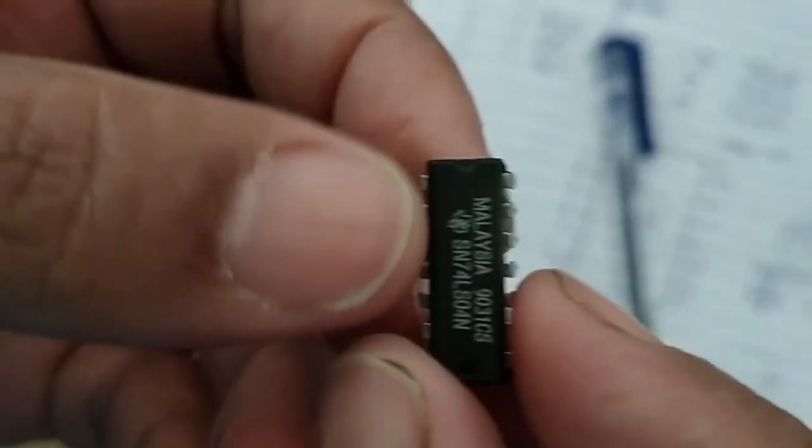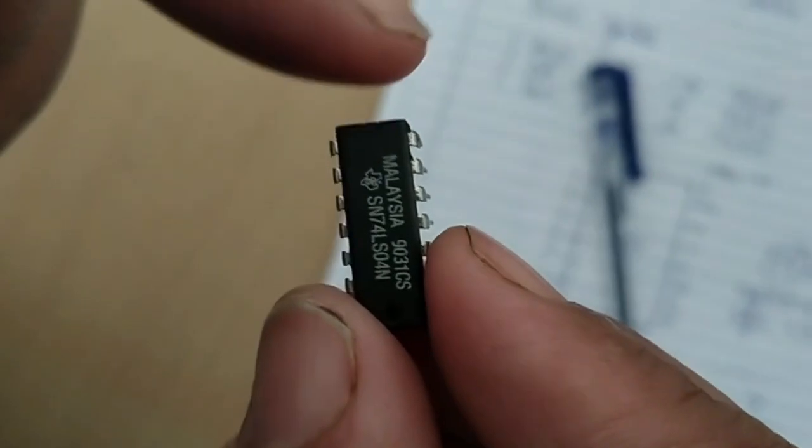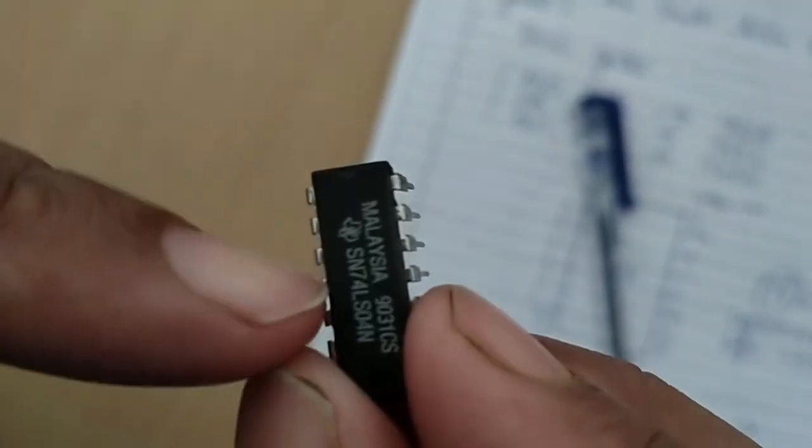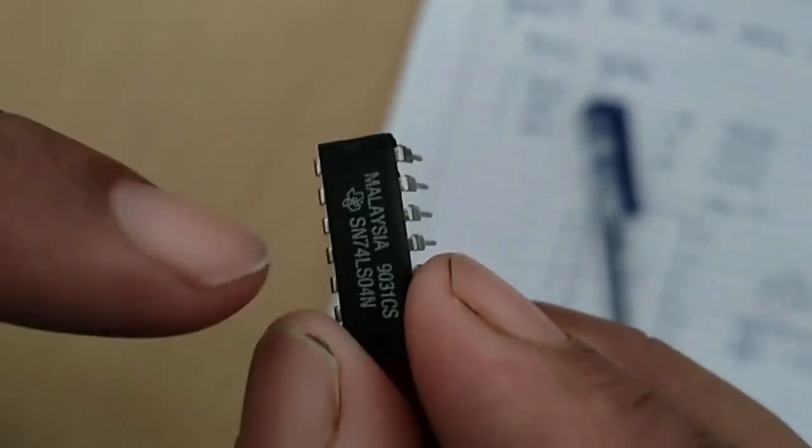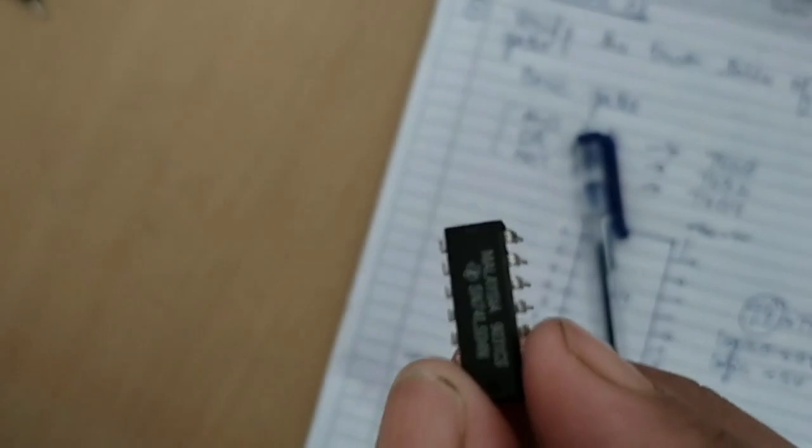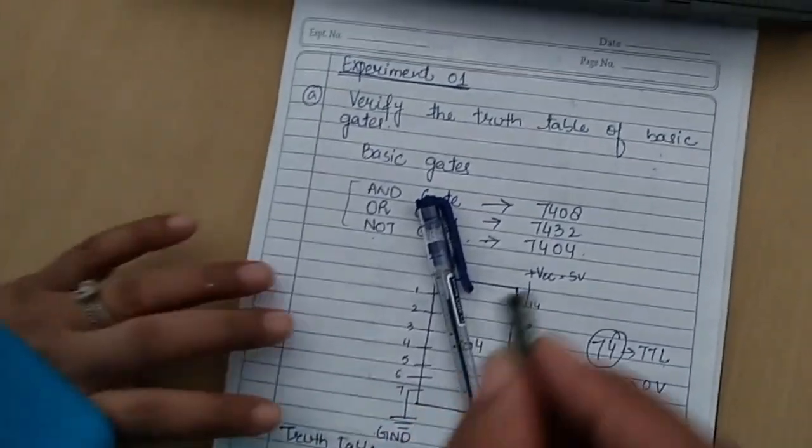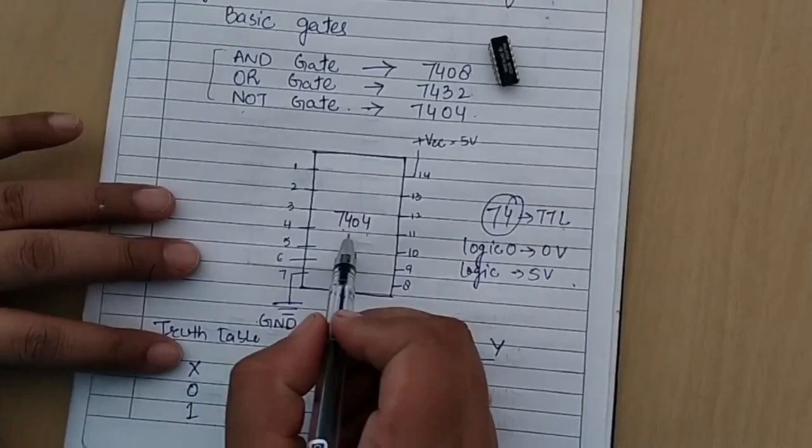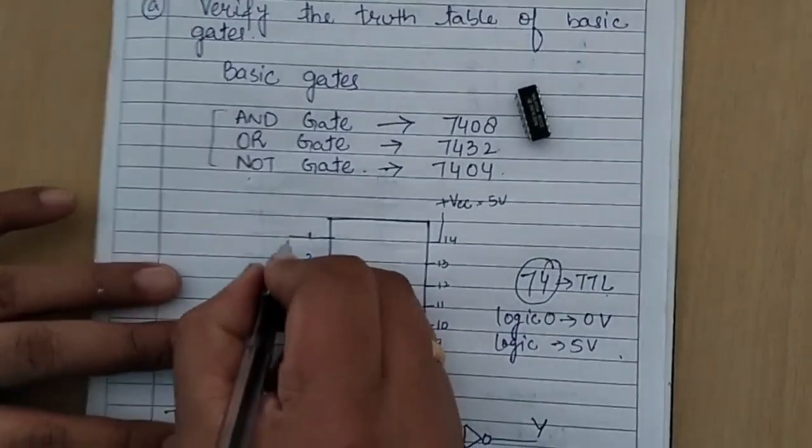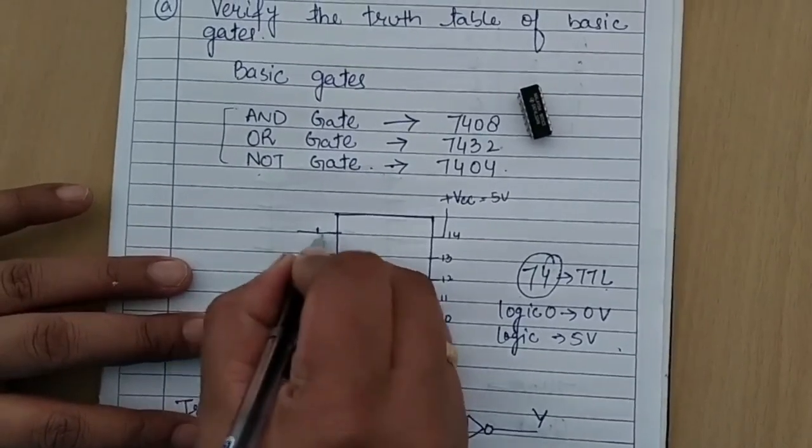The IC 7404 used for NOT gate is a 14-pin IC. This 14-pin IC can accommodate, or we can say 6 NOT gates are fabricated on this particular IC. Now we will see the connections and the pin diagram for this IC.